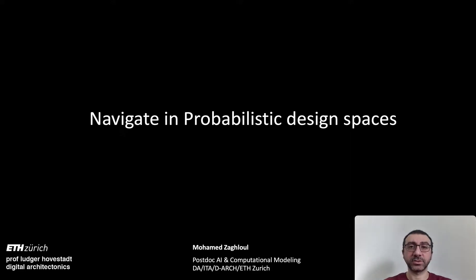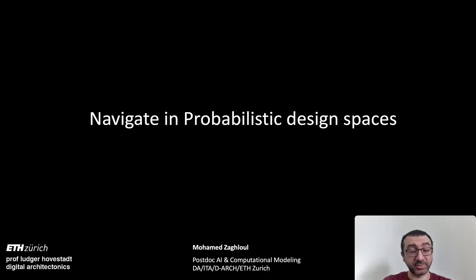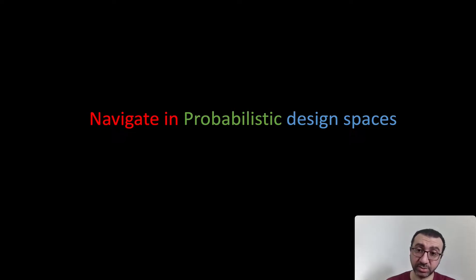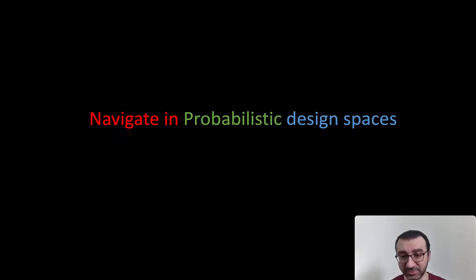Hello everyone, for this first lecture of the elective course Navigating Probabilistic Design Space. This course is mainly for architects, undergraduate students studying architecture, or development planners. We will get introduced to this interplay between three highlighted terms: design space, probability, and navigation. Design space is something you get practiced in as an architect — how to think and design a space.